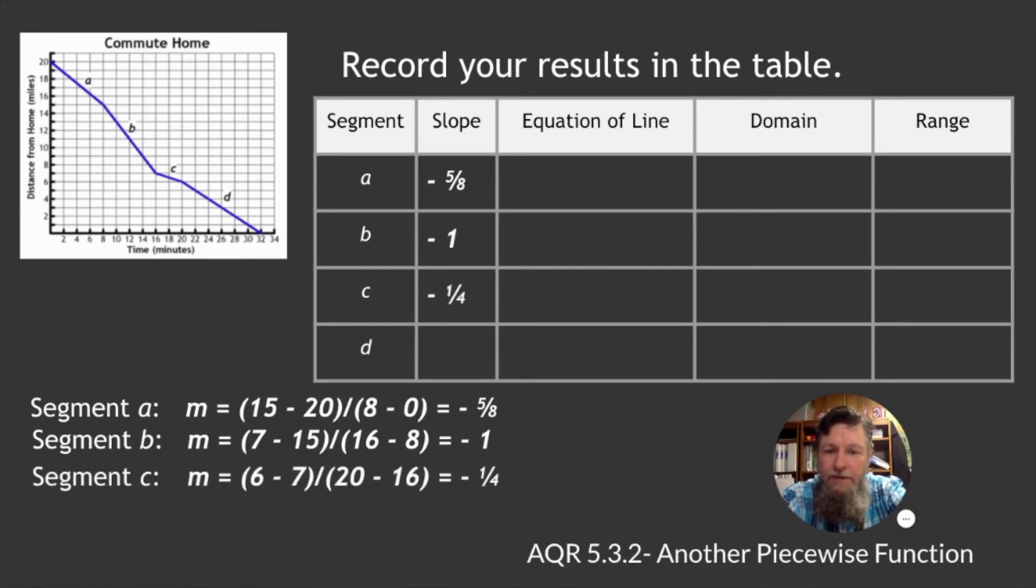Segment C, negative 1 quarter. We'll put that in the slope column. And segment D is negative 1 half. We'll put that in the slope column.